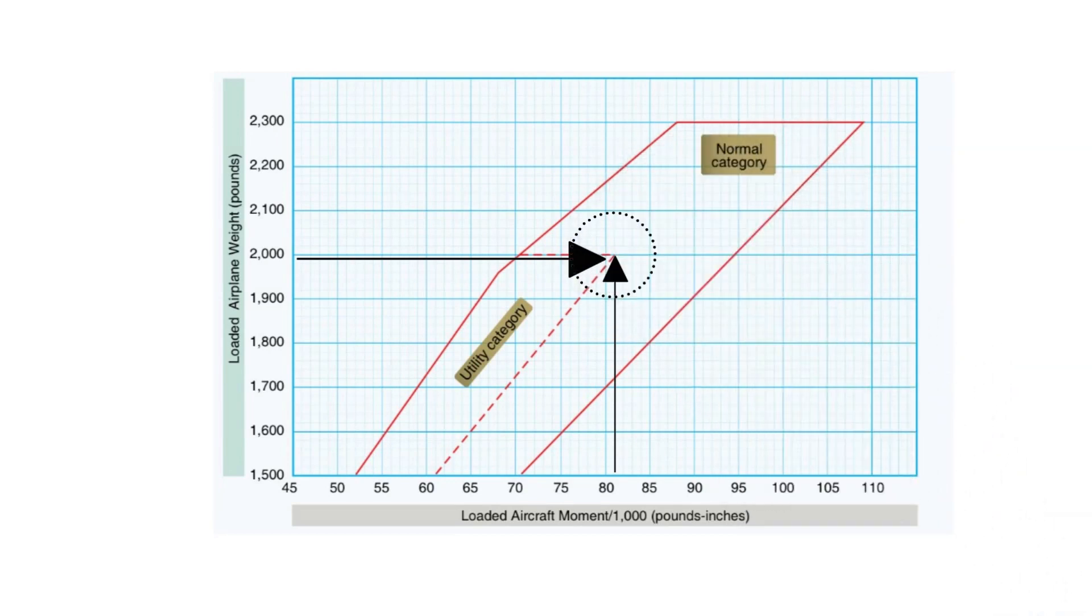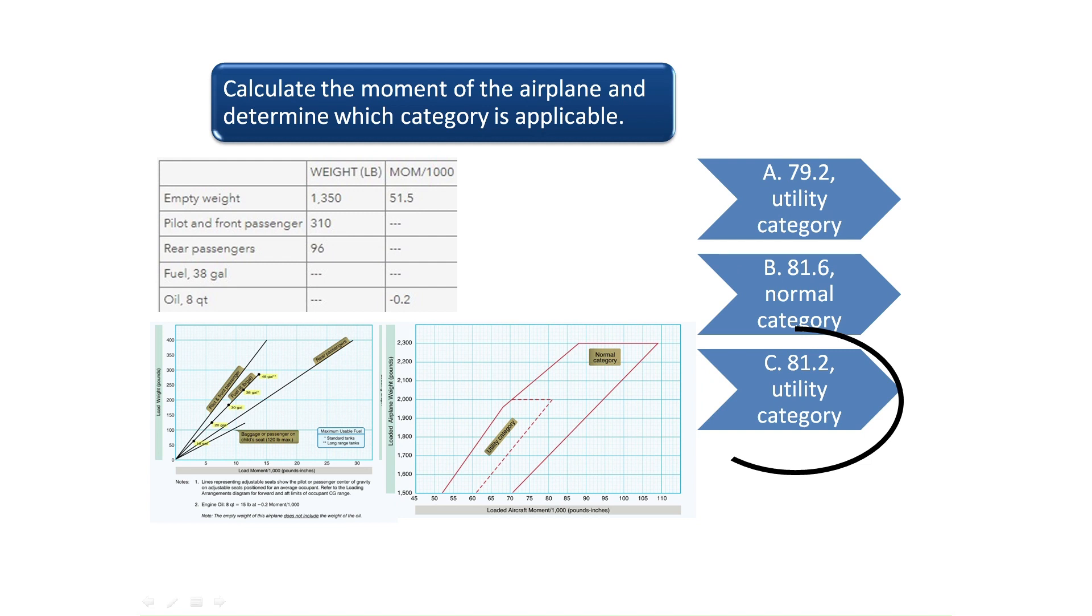Therefore, the correct answer is C. The airplane's moment divided by 1,000 is 81.2 and the aircraft is in the utility category.